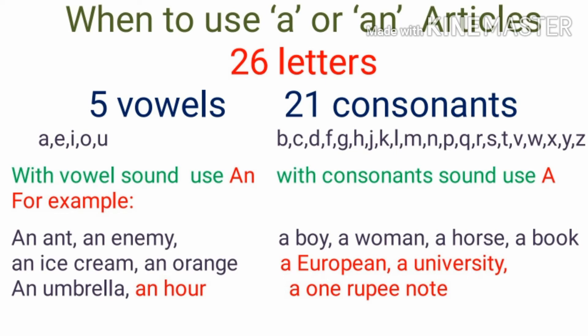Now let's do examples of consonants. A boy, a woman, a horse, a book. These nouns start with a consonant, so we have used a. But some examples begin with a vowel letter — for example a European, a university, a one rupee note. We have used a here because all three examples begin with consonant sounds. So students, be careful when using a or an. You have to remember whether the word begins with a vowel sound or consonant sound — give stress on the sound, not the letter.